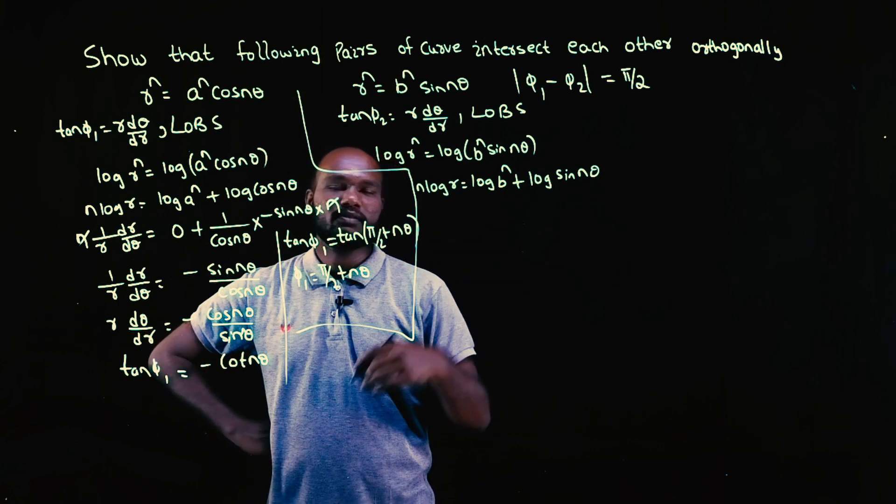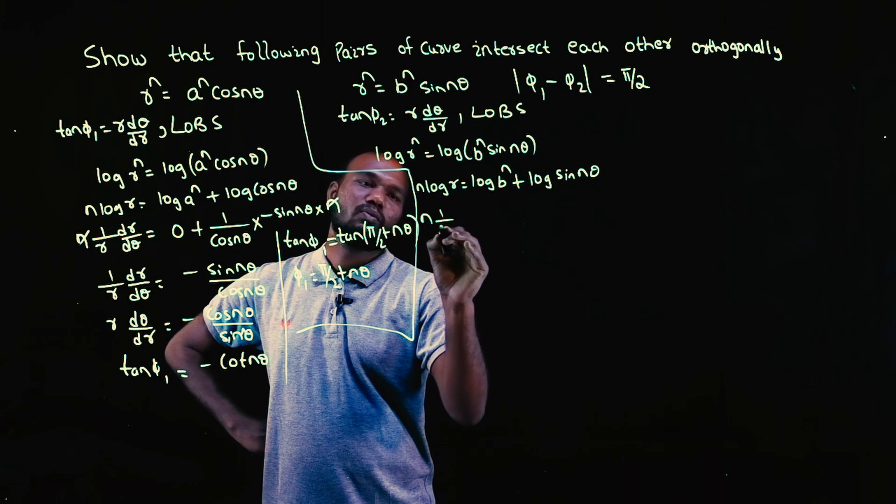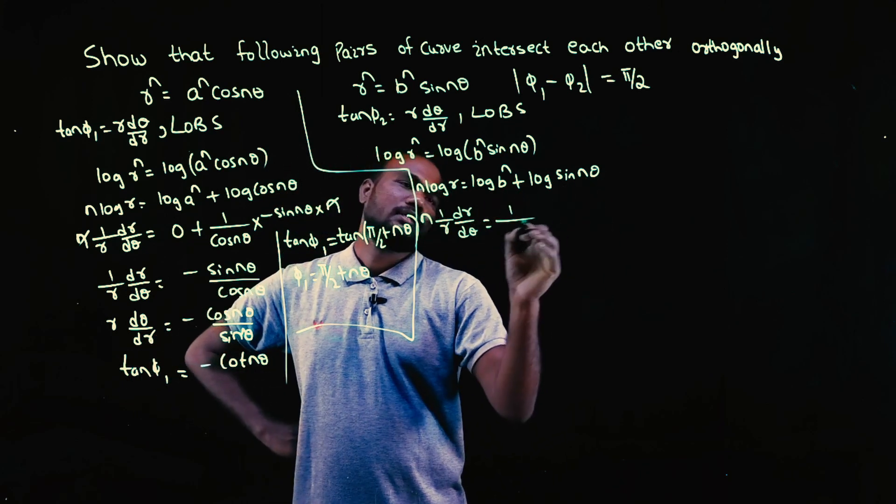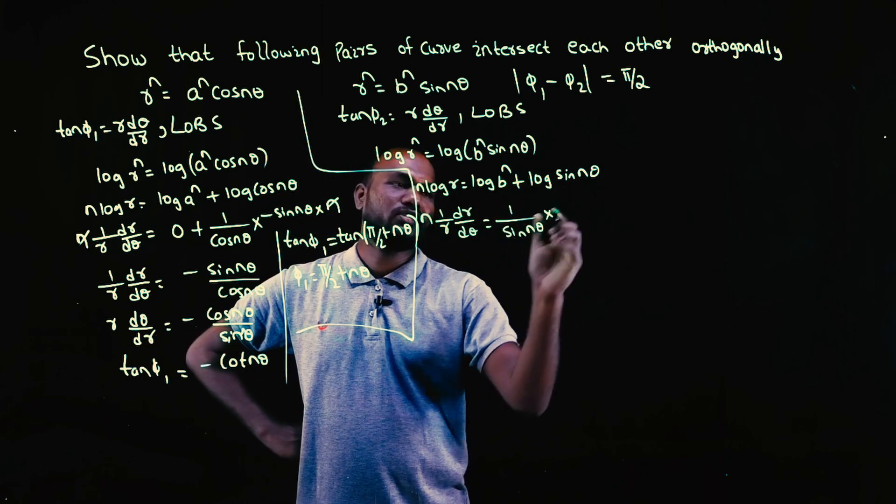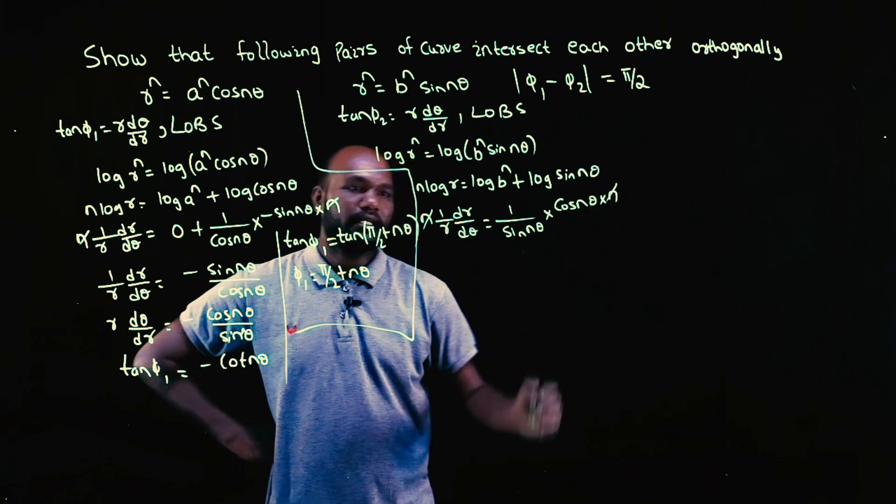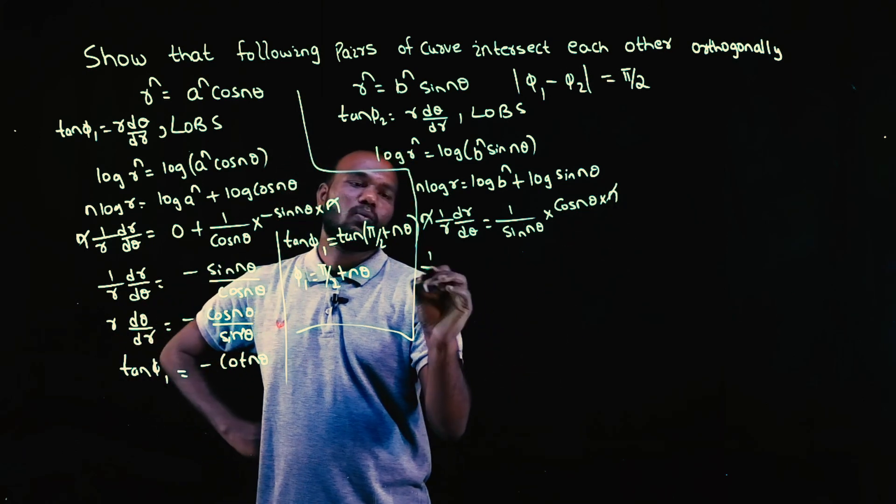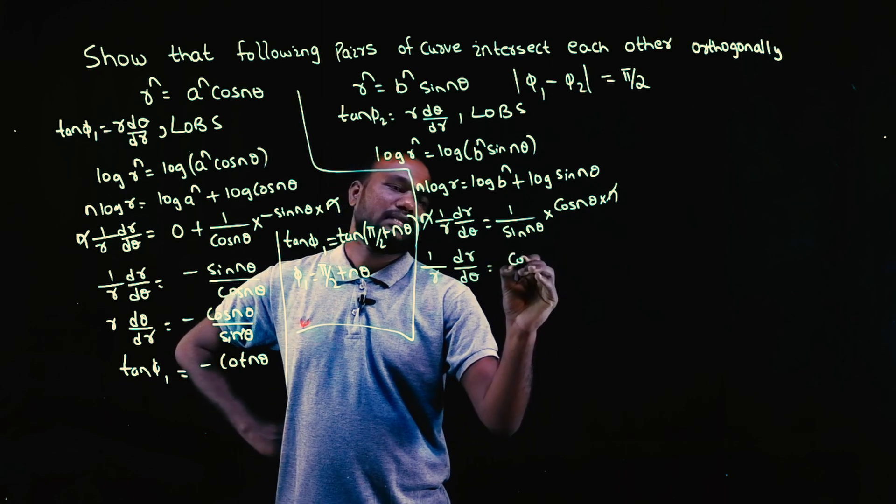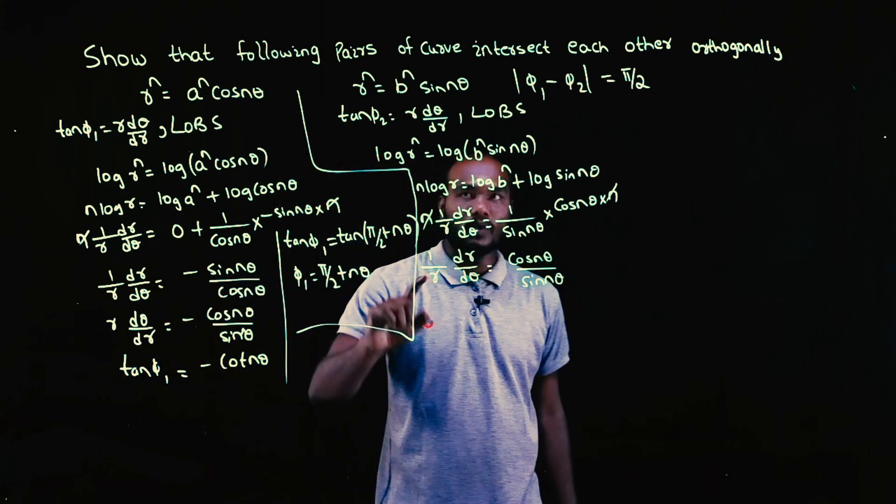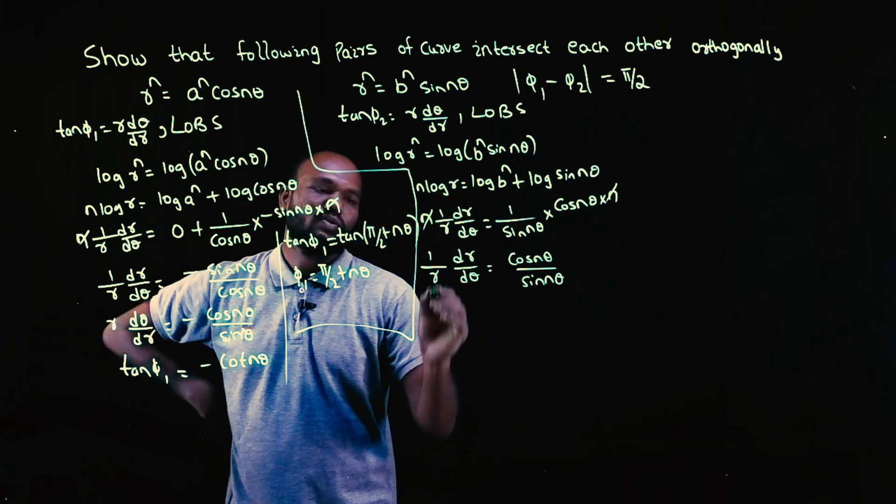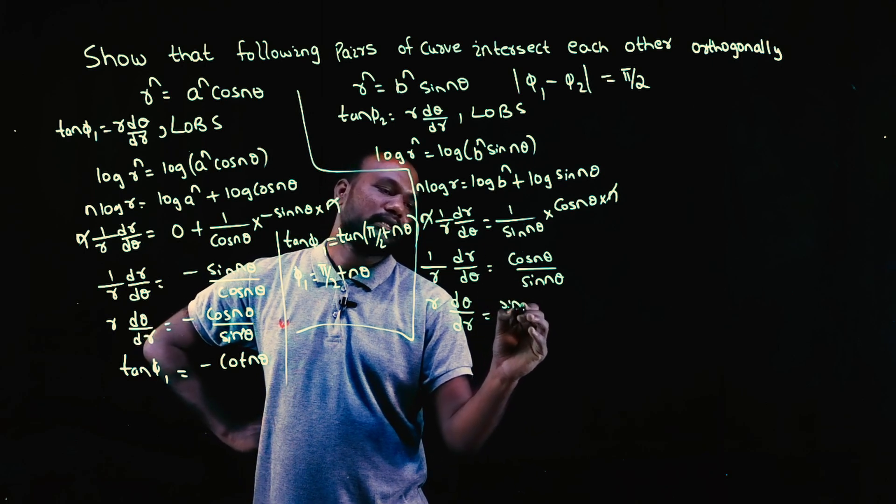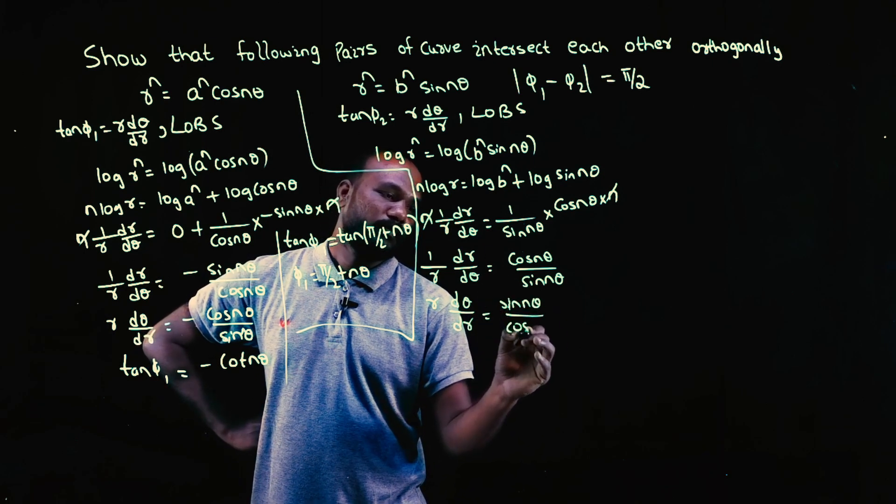Now the log properties are done, next we have to go to differentiation. 1 by r dr by d theta, log B is a number so differentiation is 0. Log sin n theta is 1 upon sin n theta times cos n theta times n. So I can write 1 upon r dr by d theta equals cos n theta upon sin n theta.